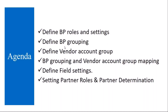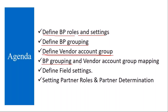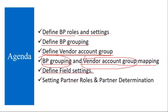The topics we are going to cover: we will see how to define BP roles and their settings, then define BP grouping — how business partner grouping is done. Define vendor account group and how to define it. Then BP grouping and vendor account group mapping — how business partner grouping and vendor account grouping are mapped. Define field settings, field selection. And setting partner rules and partner determination.